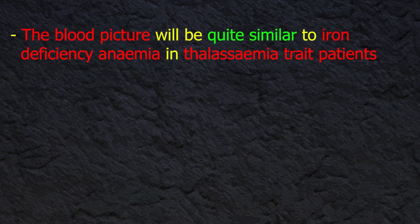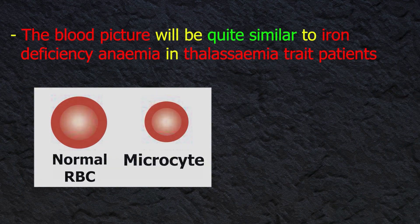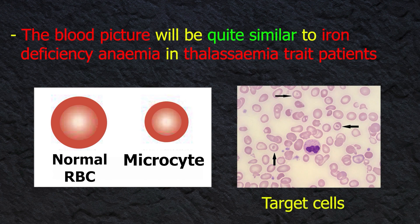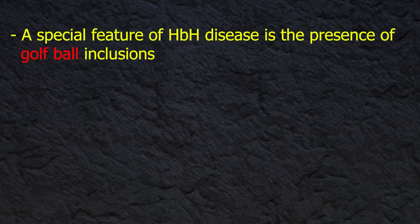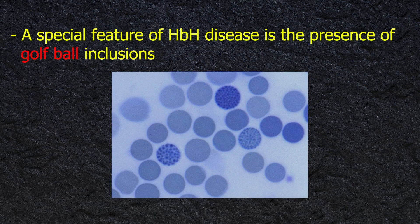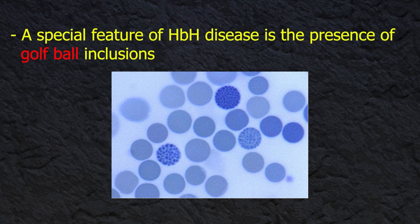The blood picture in thalassemia trait patients will be quite similar to iron deficiency anemia. Hypochromic microcytic cells will be evident, and target cells will also be seen along with poikilocytes.